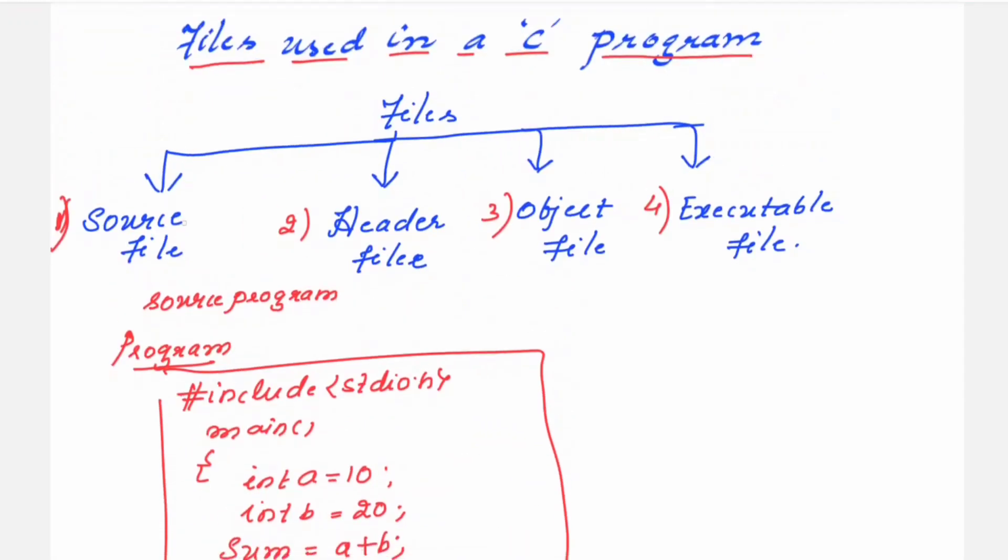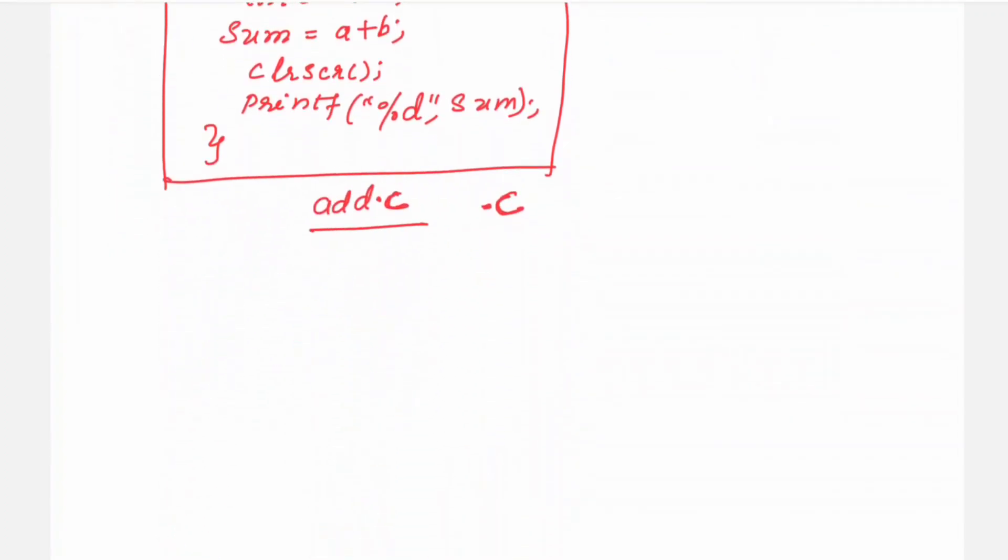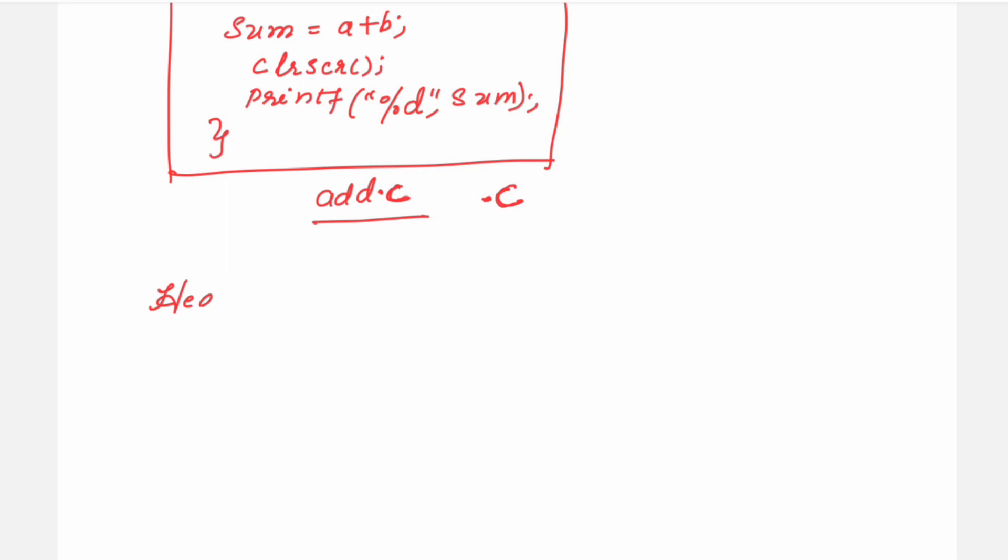So that is what is the first type. Whatever program you are writing using the high level language becomes the source file. And now, the second type header files are included here in the source file only. Using the hash include preprocessor, you may include stdio.h, then you have different header files here to perform different functions. So let me tell you about the header files.